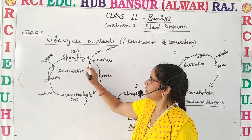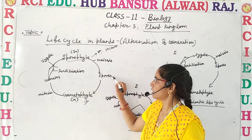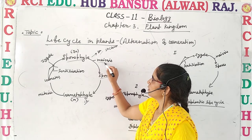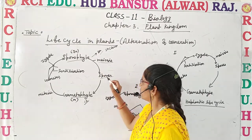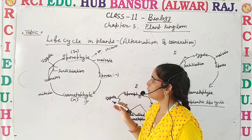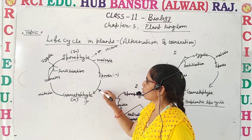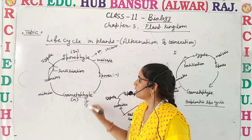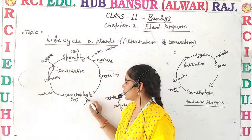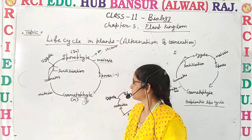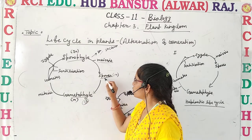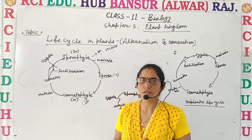This sporophytic plant body gives rise to the spores. These spores are formed due to the process of meiosis, which means these spores are haploid in nature and have half the number of chromosomes. These spores give rise to the gametophytic stage or gametophyte, so overall the gametophyte is also haploid. Spores are the first cell of the gametophytic stage.